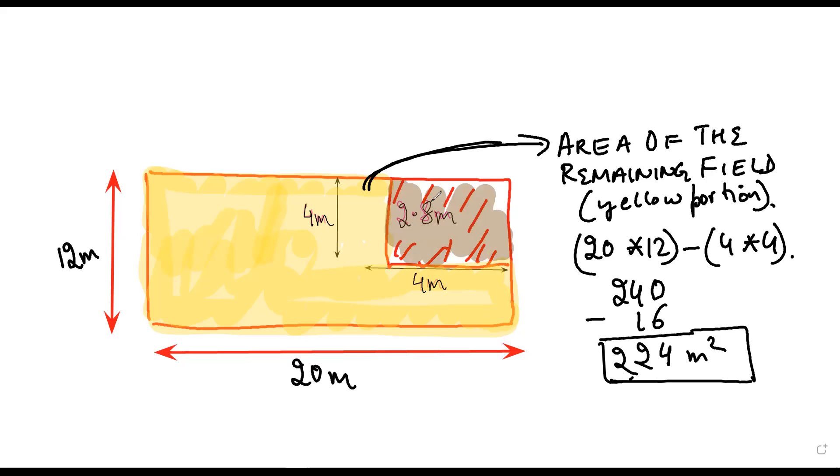So what you will have to calculate is the soil taken from the pit, the brown portion. This would be equal to 4 into 4 into 2.8 meter cube. Have you guys understood this? Yes. Is it making sense? Yes.